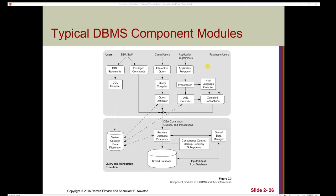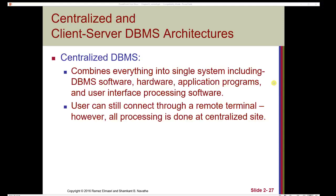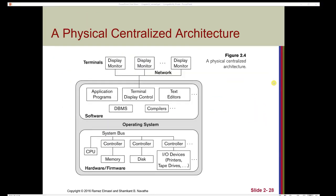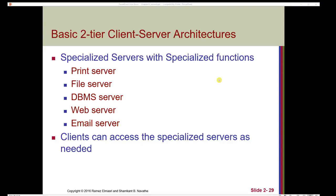Let's talk about centralized and client-server DBMS architectures. In a centralized database, everything is combined into a single system — including the DBMS software, hardware, application programs, and user interface processing software — and all processing is done at a centralized site, though users can still connect through a remote terminal. The basic two-tier client-server architecture has different servers with specialized functions — for example, a printing server, a file server, a web server, an email server, and a DBMS server — and clients can access these specialized servers as needed.